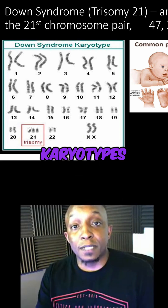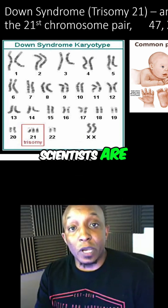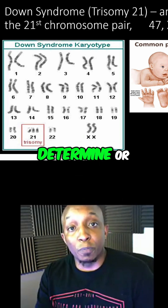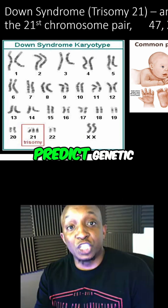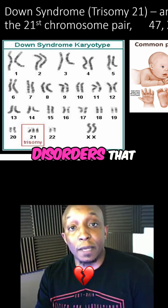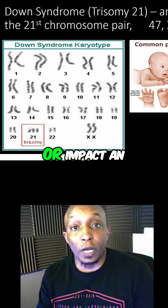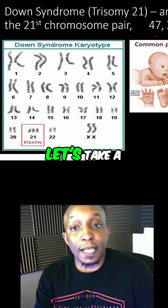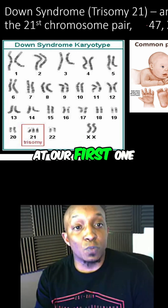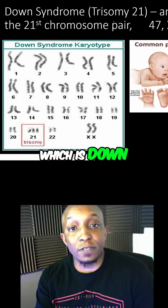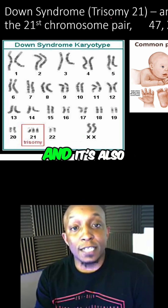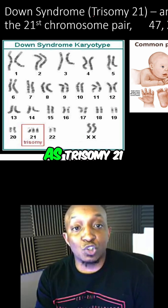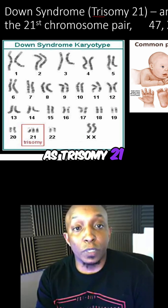By analyzing karyotypes, scientists are able to determine or predict genetic disorders that may affect or impact the individual. So let's take a look at our first one, which is Down syndrome, also known as trisomy 21.